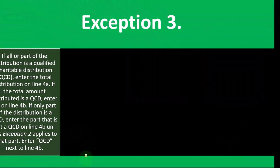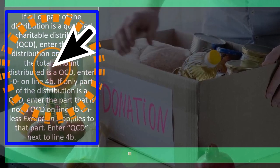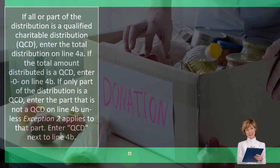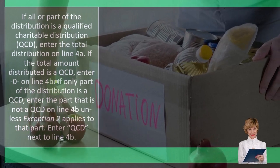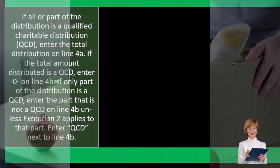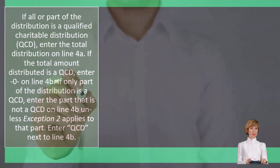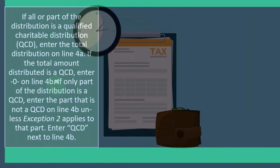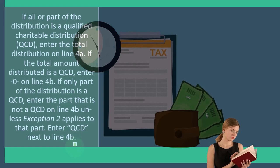Exception three: if all or part of the distribution is a qualified charitable distribution — a QCD — enter the total distribution on line 4A. If the total amount distributed is a QCD, enter zero on line 4B. If there's a distribution from a retirement plan, it's usually a taxable event. You might consider whether you can give that distribution as a charitable contribution and get a tax benefit by directing it straight to the charity. That's a more unusual situation but a possible tax planning opportunity. If only part of the distribution is a QCD, enter the part that is not a QCD on line 4B unless exception 2 applies to that part.